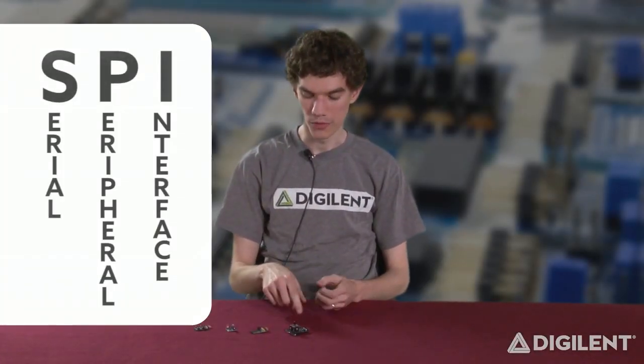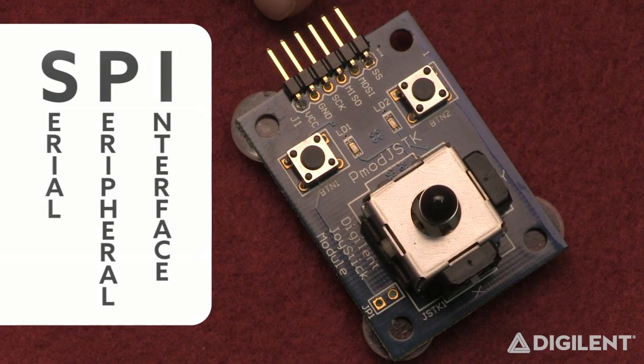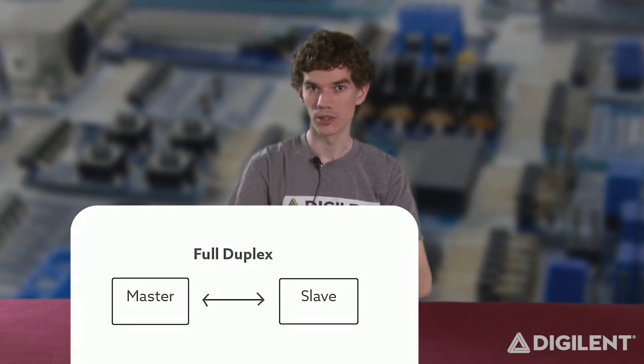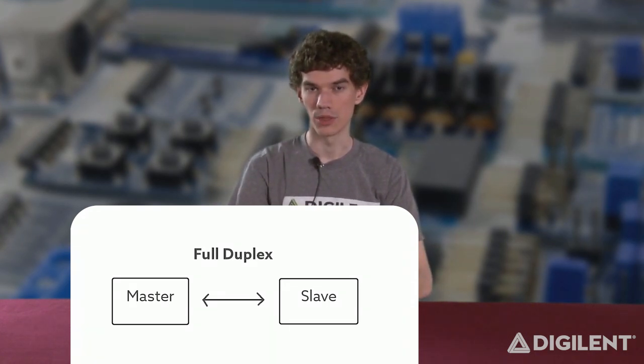Let's start with SPI. Serial Peripheral Interface, which is what this PMOD joystick uses, was a communication protocol originally developed by Motorola. SPI is a full duplex protocol, meaning that both the master device and the slave device which it's talking to are able to communicate with each other at the same time. The way that this works is the master device will send out a start condition to the slave device.